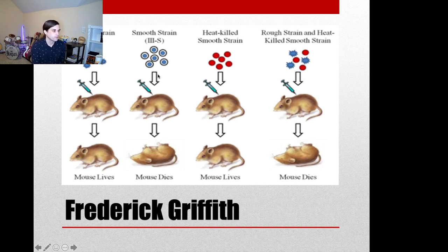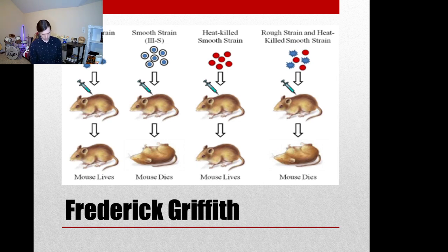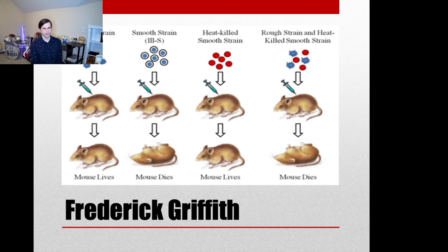The smooth strain has a capsule on the outside that prevents it from being eaten by the immune system, allowing it to grow unchecked inside the mouse, replicate, and cause disease. When Griffith did an autopsy on a mouse injected with the smooth strain, he found the bacteria living inside — not unexpected. He started to wonder whether it was the capsule itself causing the harm, since both strains are the same species but one kills and the other doesn't.